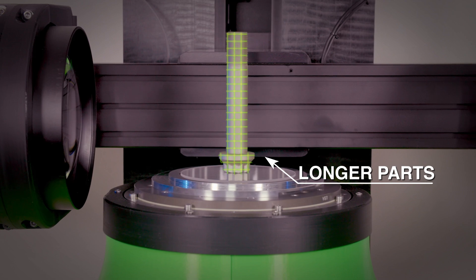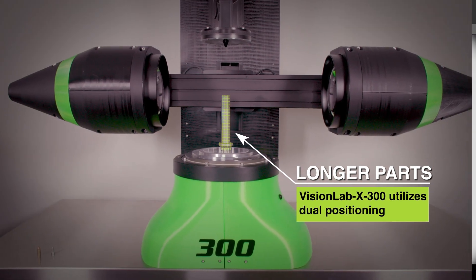When measuring longer parts, VisionLab X300 utilizes dual positioning.